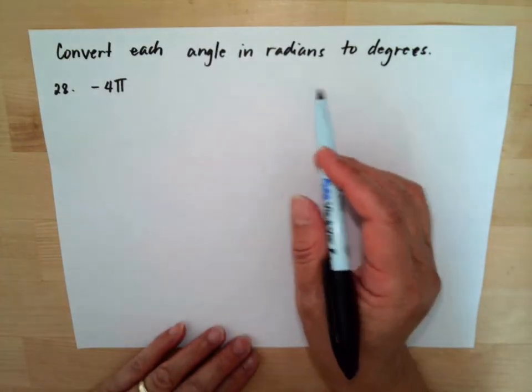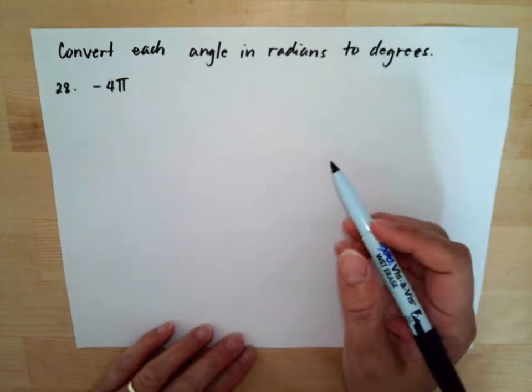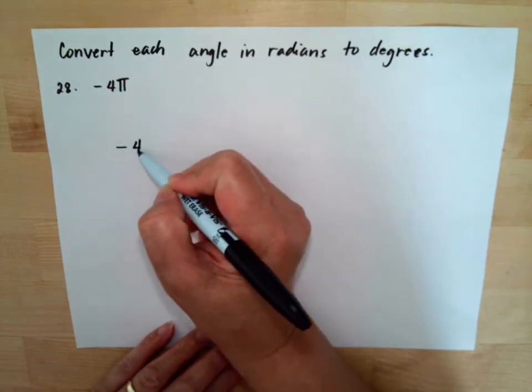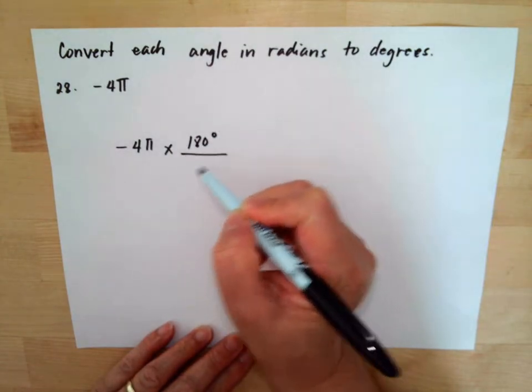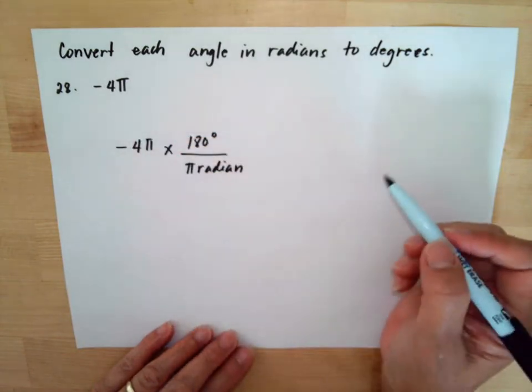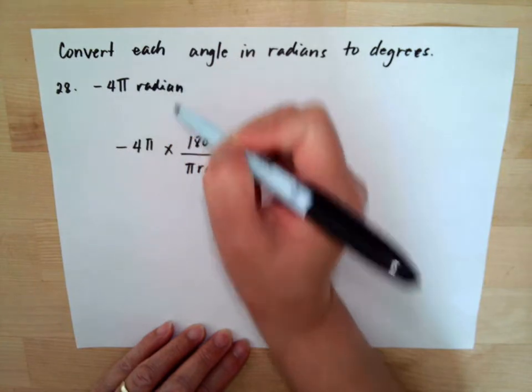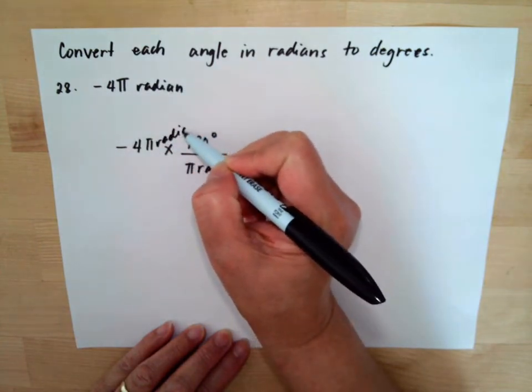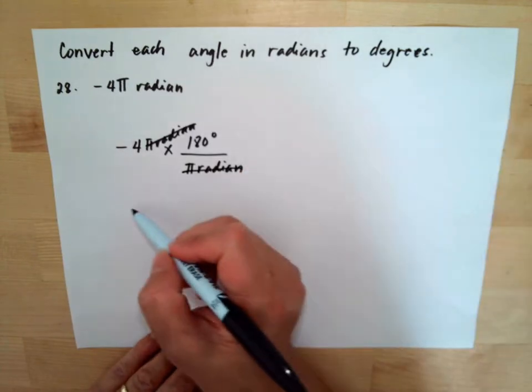Convert each angle in radians to degrees. So we have negative 4π as our angle, so we need to multiply negative 4π by 180 degrees over π radians. Now remember, if it is with the π, it is radians. So this is with radians, so radians π radians over π radians would be cancelled.